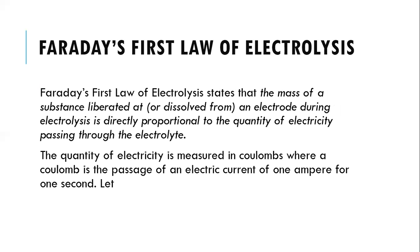The First Law of Electrolysis can be stated as: the mass of substance liberated or dissolved from an electrode during the process of electrolysis is directly proportional to the quantity of electricity passing through the electrolyte. So the mass of substance liberated or dissolved and the quantity of electricity are directly proportional. The quantity of electricity is measured in coulombs, where one coulomb is the passage of a current of one ampere for one second.